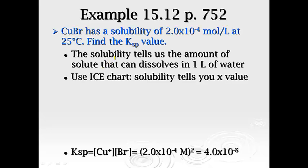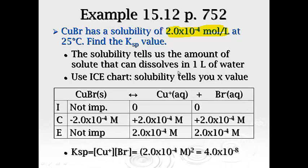So if we have copper 1 bromide has a solubility of 2.0 times 10 to the negative 4th moles per liter at 25 degrees Celsius, find the Ksp value. The solubility tells us the amount of solute that can dissolve in 1 liter. So if we use an ice chart, the solubility will give us, can give us the X value.